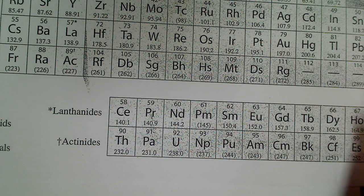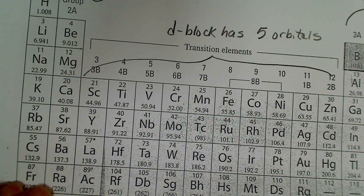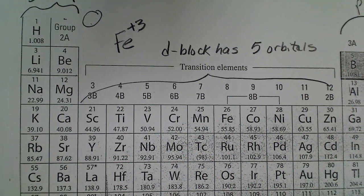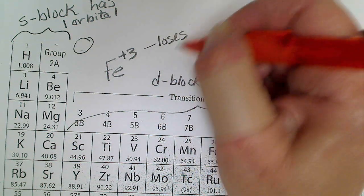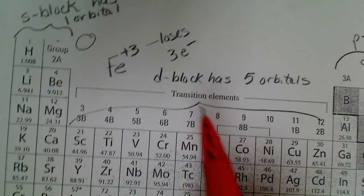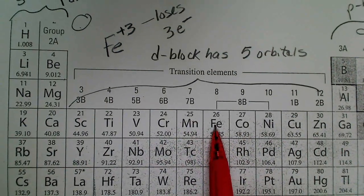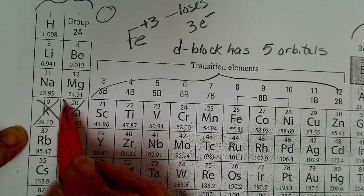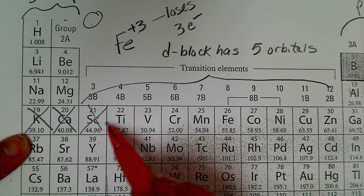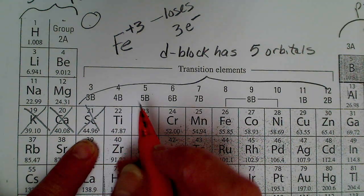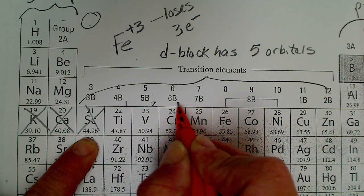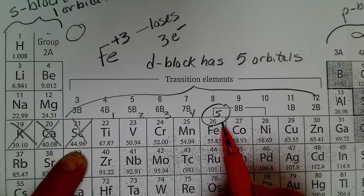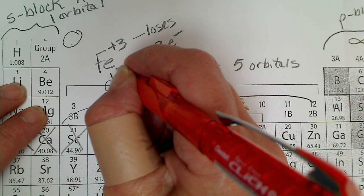Using the periodic table, if we have iron in the +3 oxidation state, iron loses three electrons. We cross out three electrons and then count how many d electrons remain — one, two, three, four, five — so iron³⁺ is a d⁵ metal.